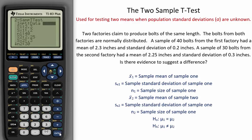In this problem we are given summary statistics. You can also be given data and enter this under STAT EDIT List 1 and List 2. Two factories claim to produce bolts of the same length. The bolts from both factories are normally distributed. A sample of 40 bolts from the first factory had a mean of 2.3 inches and a standard deviation of 0.2 inches.